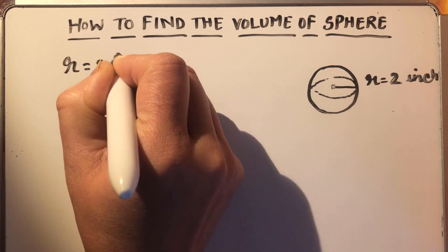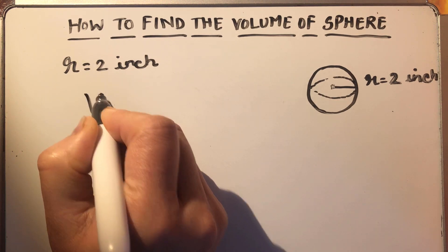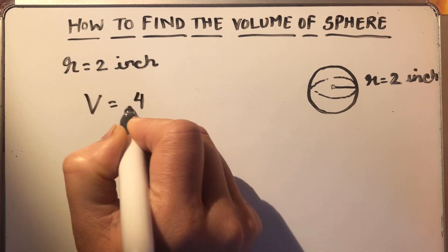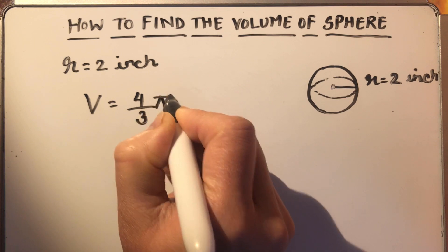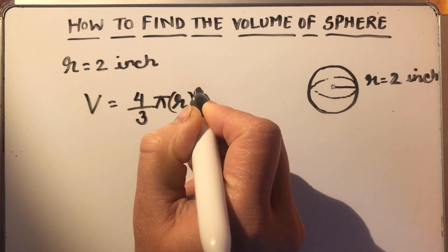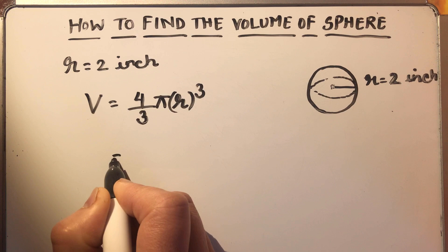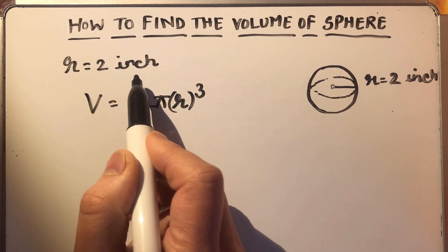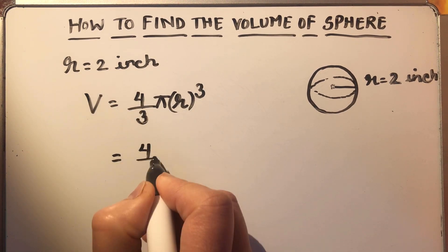So to find the volume of this sphere, we have a formula: V is equal to 4 over 3 pi R cube. So we know the value of R is 2 inches. So let's put the values in the formula.